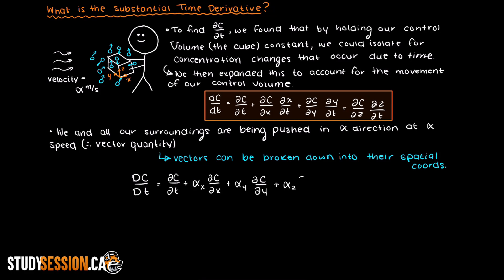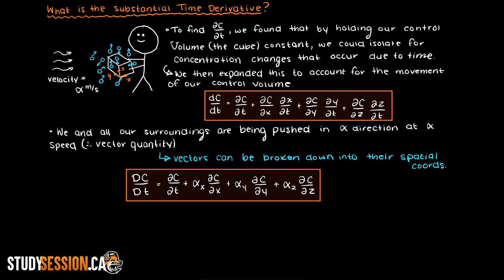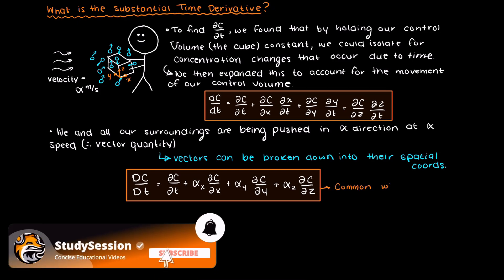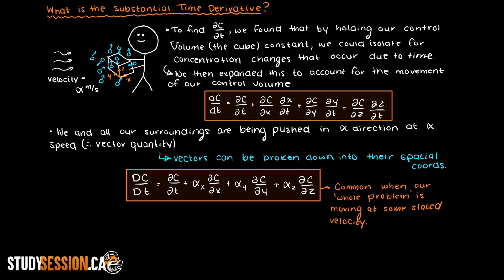Note that the substantial derivative is always denoted by a capital D instead of a lowercase d that we are accustomed to in the total time derivative. This type of derivative is very common when our whole problem is moving at some velocity. For example, if you were studying a river flowing at some velocity and then added a contaminant into your river and wanted to see how it worked its way through the river, you can use a substantial time derivative as your whole problem is moving at some constant velocity.